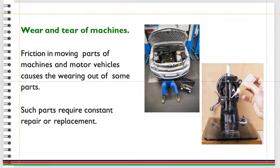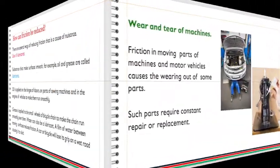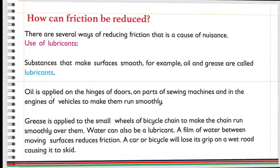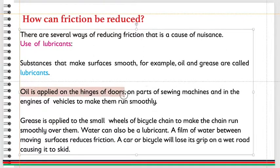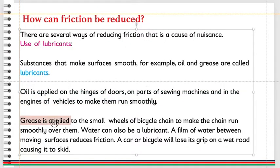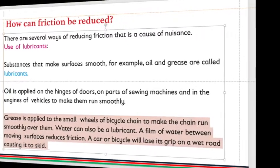Oil is applied on the hinges of doors, on parts of sewing machines, and in the engines of vehicles to make them run smoothly. Grease is applied to the small wheels of bicycle chain to make the chain run smoothly over them. Water can also be a lubricant. A film of water between moving surfaces reduces friction, but a car or bicycle will lose its grip on a wet road, causing it to skid.